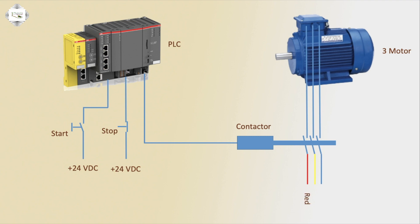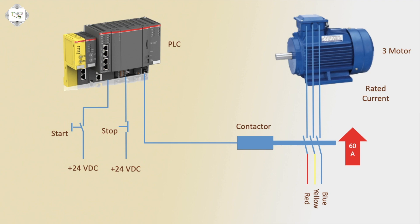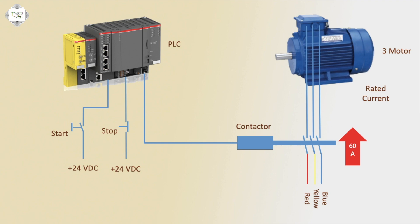The 3-phase motor has red, yellow, and blue connections. With 24-volt DC input, the PLC programming activates the outgoing conductor and the 3-phase line, with the motor running. The magnetic contactor rotates the current in the PLC and the motor turns off. This is a simple star-delta connection diagram.